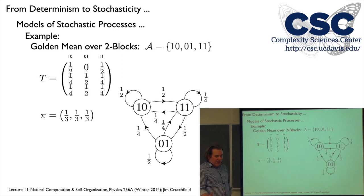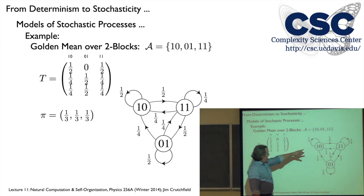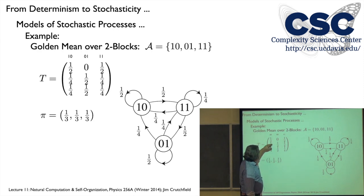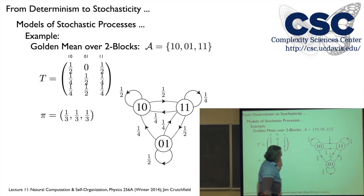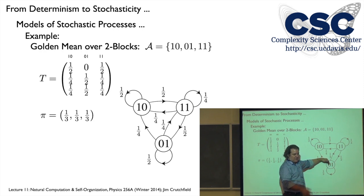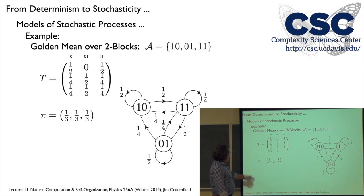Here is how we represent the golden mean process as a state-based model. The states are now these length-two words: zero-one, one-zero, and one-one. Zero-zero doesn't occur because it can't be produced by the process. You have to work out the transition matrix carefully — how one-zero transitions to one-one and so on. There is a restriction: you can't go from one-zero to zero-one because that would put two zeros next to each other. So there's an edge that's missing from the complete three-state graph. You can show that these blocks occur with equal probability.